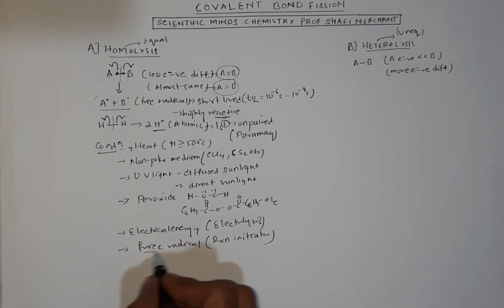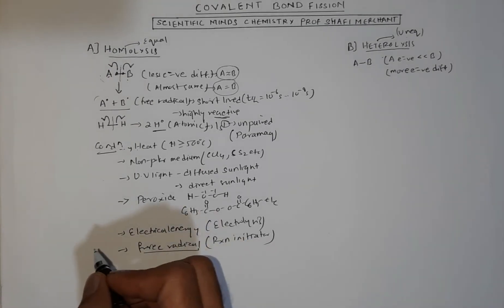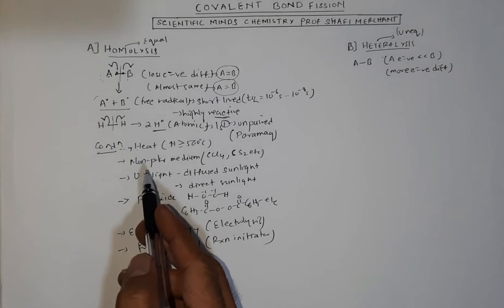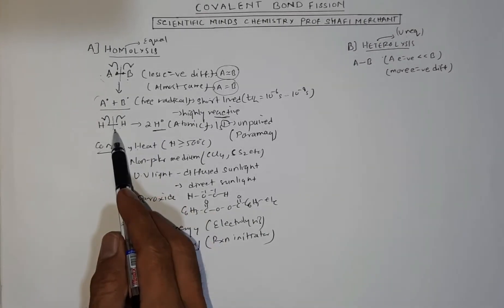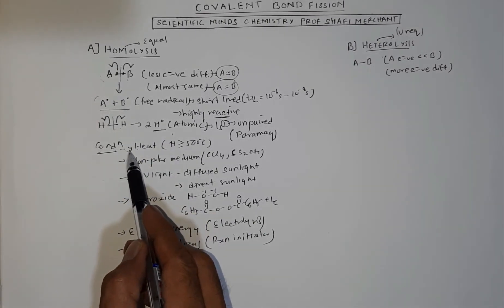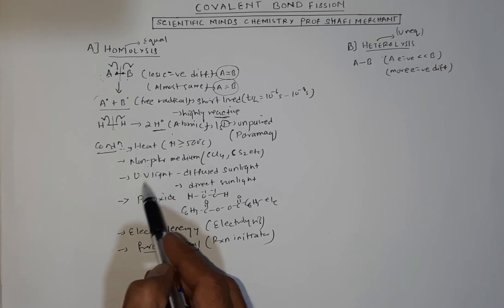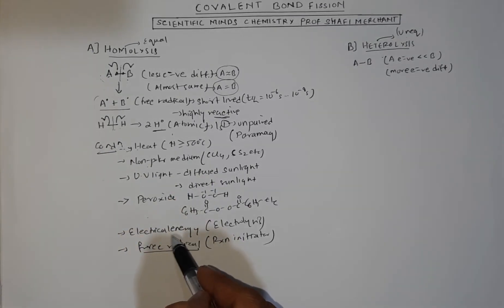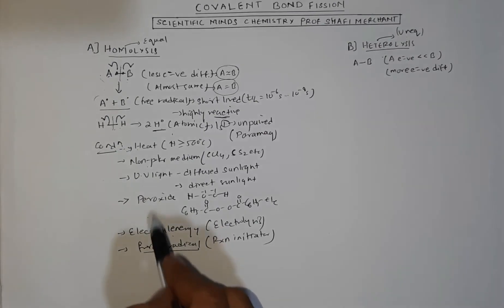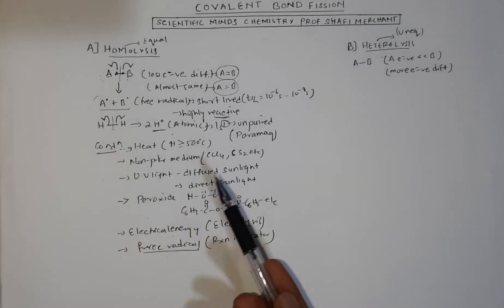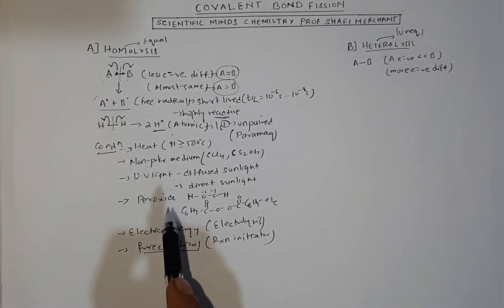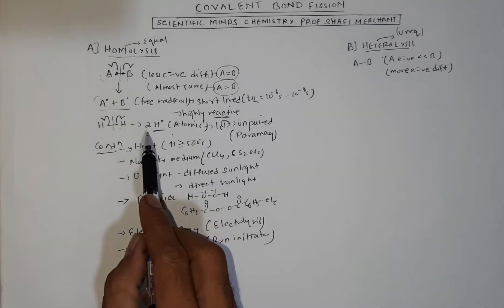That will initiate the reaction. If you want to bring about homolysis, either you heat it, or use non-polar media, or UV light, peroxide, electrical energy, or free radicals. All these conditions should be mentioned. You can directly add free radicals to the system that results in homolysis.